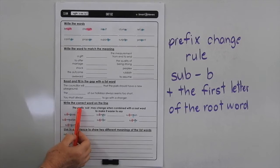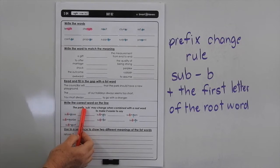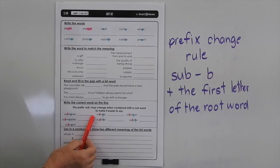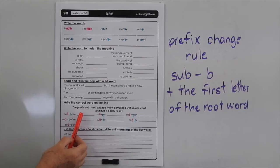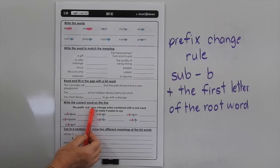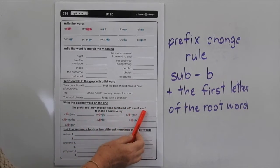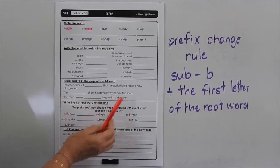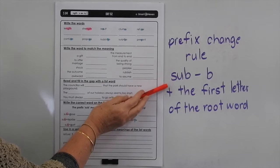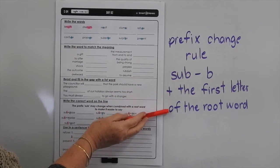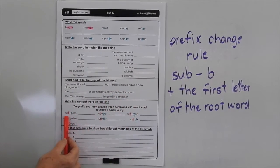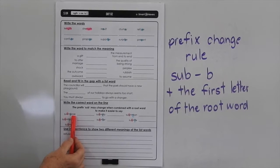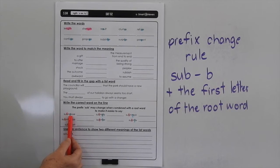This is about the prefix change rule that we've started talking about in this Level S. The prefix sub may change when combined with the root word to make it easier to say. We're allowed to change the last letter of the prefix to match the first letter of the root word. So rather than saying subpose, which is quite difficult to say, we change that B to match the first letter of pose — so it would be suppose.